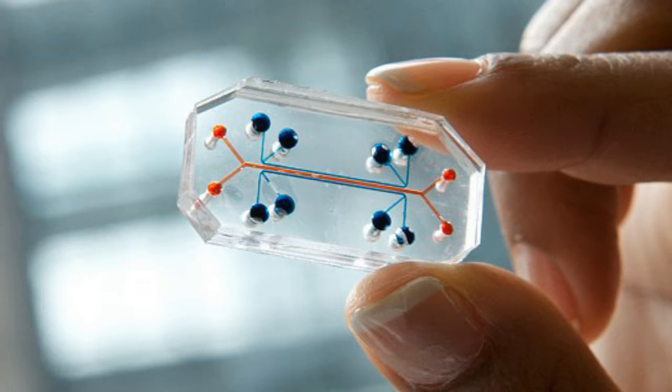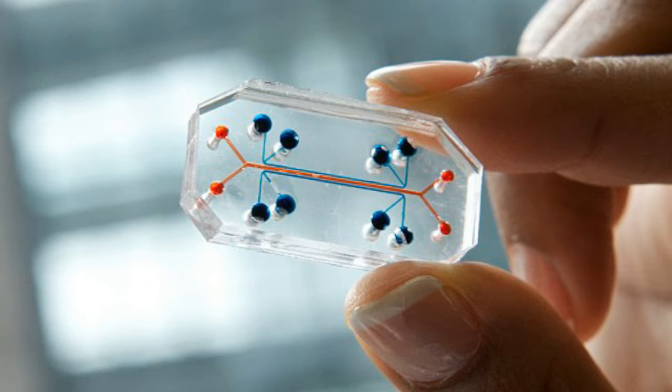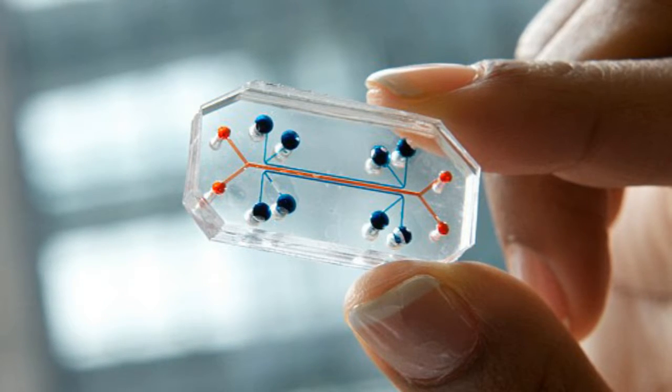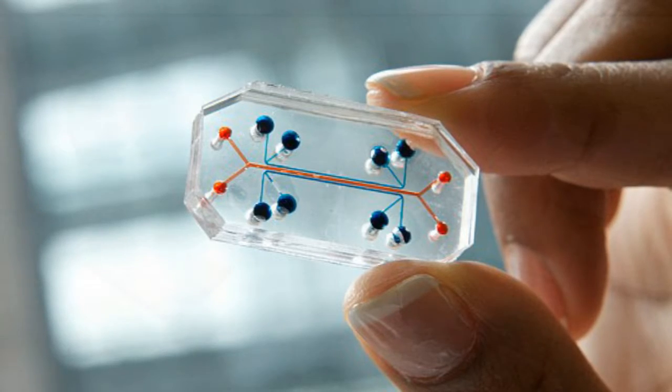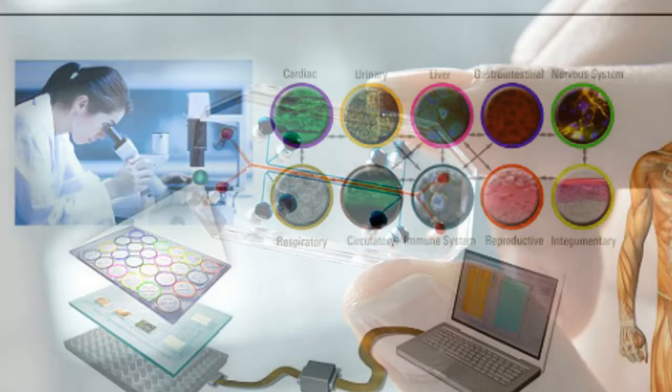The three-dimensional tissues are grown in layers inside plastic chips that are about the size of a computer memory stick. Each chip contains tiny channels that mimic the structure of the organ and are lined with human cells.